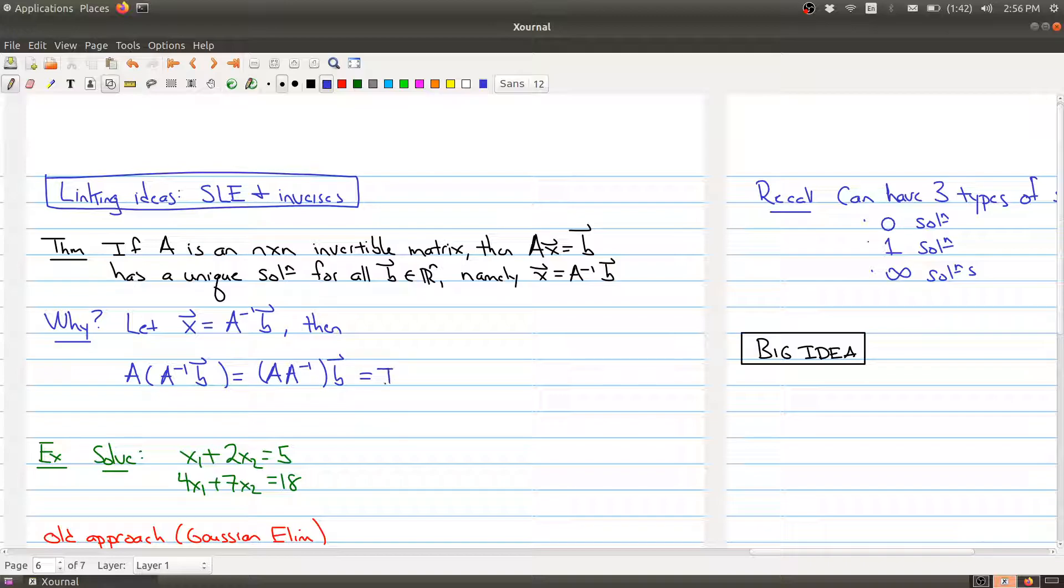But A times A inverse collapses to the identity matrix. So the identity matrix times the vector b. And we haven't given this much discussion, but whenever you take the identity matrix and you multiply it by a vector, you get back the original vector b itself.